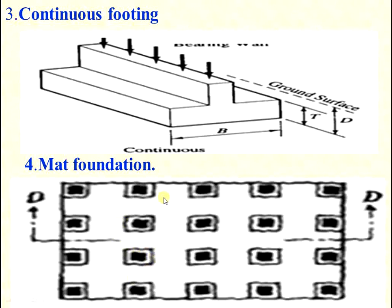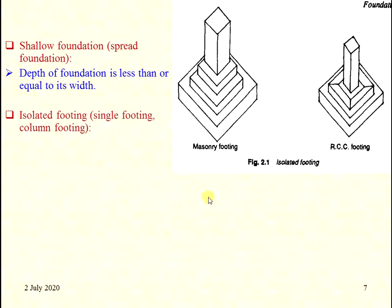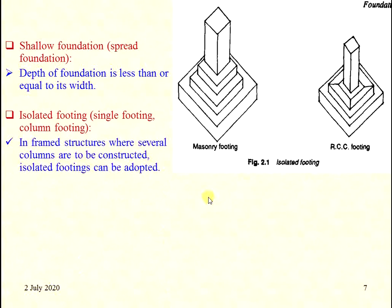Mat foundation is also continuous but has a distance maintained between the two columns. For spread footing, the depth of foundation is less than or equal to its width. Isolated footing is adopted in frame structures where several columns are to be constructed.